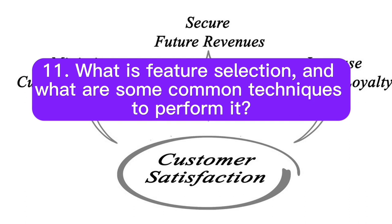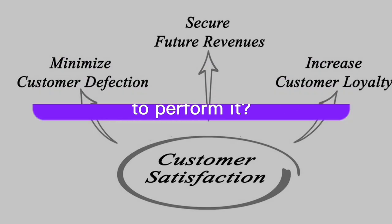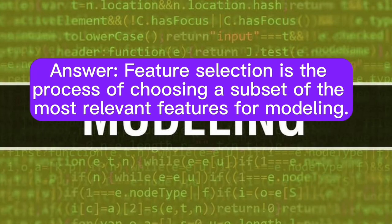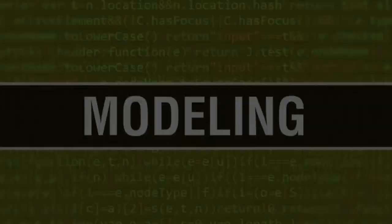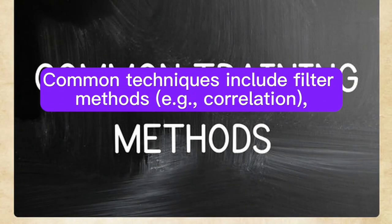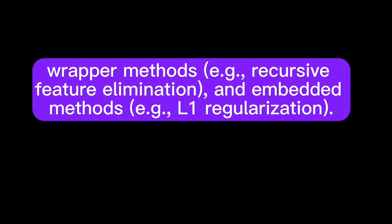Question 11: What is feature selection, and what are some common techniques to perform it? Answer: Feature selection is the process of choosing a subset of the most relevant features for modeling. Common techniques include filter methods (e.g., correlation), wrapper methods (e.g., recursive feature elimination), and embedded methods (e.g., L1 regularization).